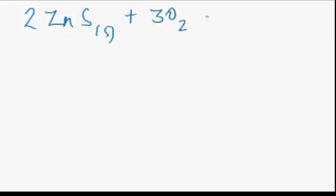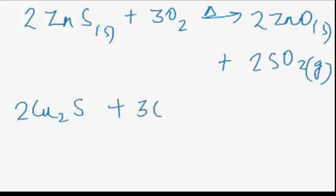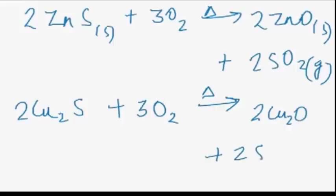When heat is applied to zinc sulphide ore, zinc oxide along with sulphur dioxide gas is formed. Let us take another example of copper sulphide (Cu2S). When copper sulphide is heated in the presence of air, copper oxide is formed along with sulphur dioxide gas. These are the chemical reactions for roasting.